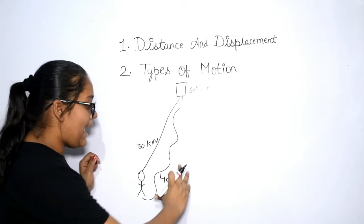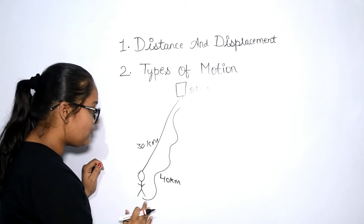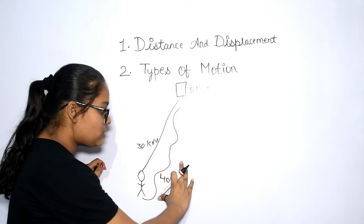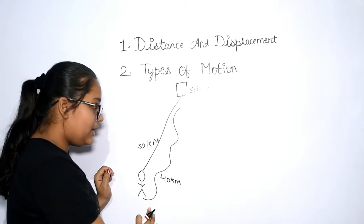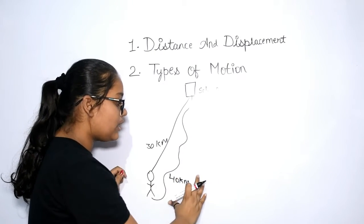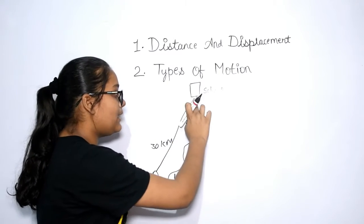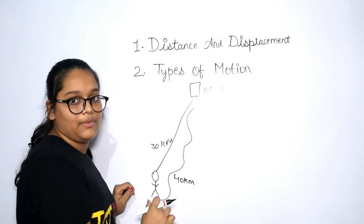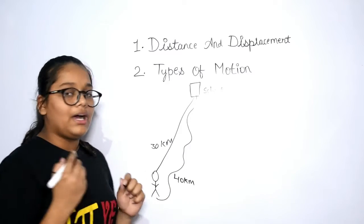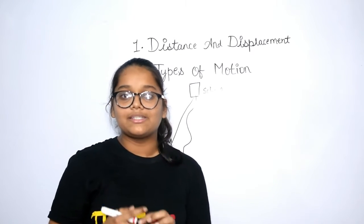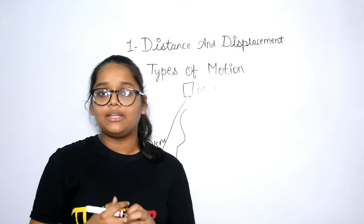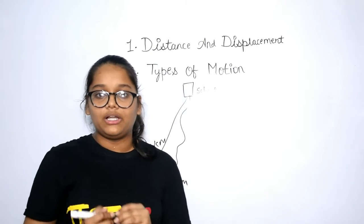I have told you that the actual length, this is the actual length from home to school. The actual length of the path from initial point to final point is known as distance and the shortest distance between initial point and final point is known as displacement. So, the other fact is that distance is often greater than or equal to displacement.